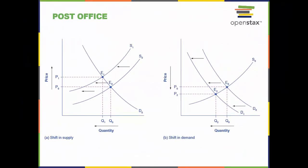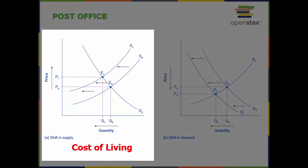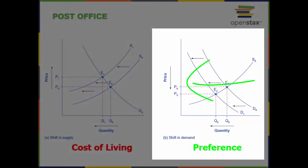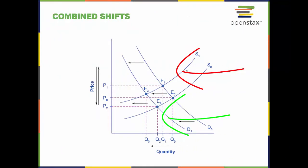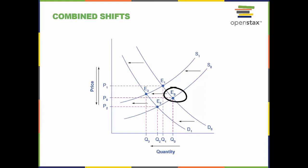Here we can see two forces working at the same time, shifting the supply of U.S. Post Office services and the demand for those services. A cost of living increase is the force shifting the supply from S0 to S1, and a change in consumer preference for email instead of traditional mail is shifting the demand curve from D0 to D1. Combining both shifts in the same graph, we can see how the equilibrium changes from E0 to E1 and E2, representing the shifts to supply and demand respectively, and then finally E3, representing the new equilibrium resulting from the combined shifts.